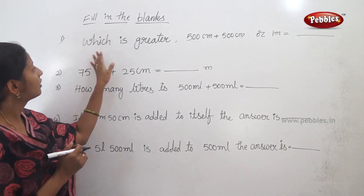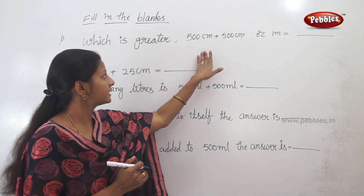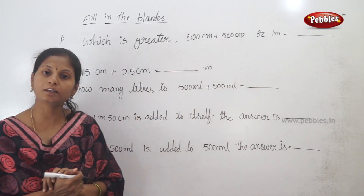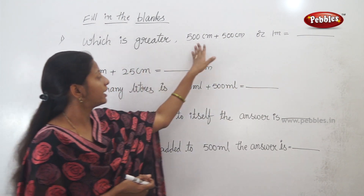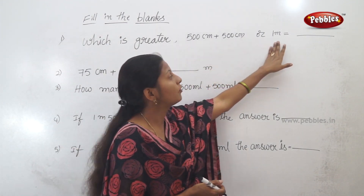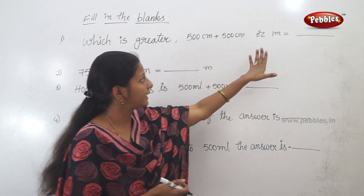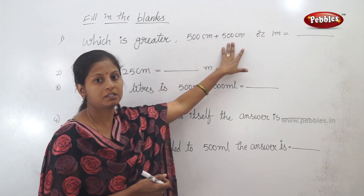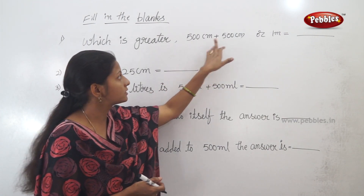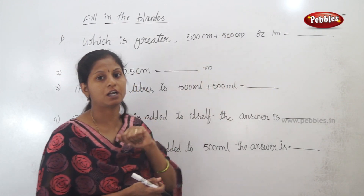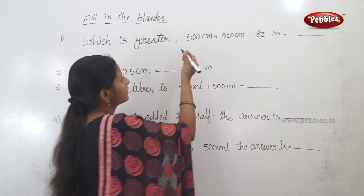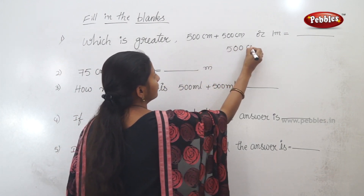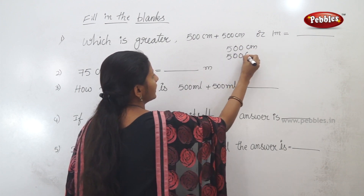First question: which is greater, 500cm plus 500cm, or 1m? We are going to check each. First, here we have 500 plus 500cm. So I'm going to add 500 centimeters plus 500 centimeters.